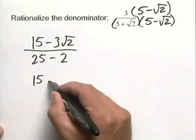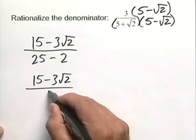This can now be written as 15 minus 3 square root of 2 all over 23.